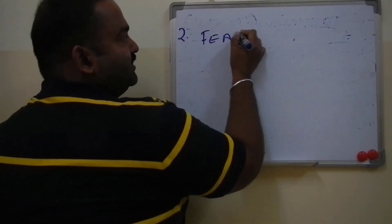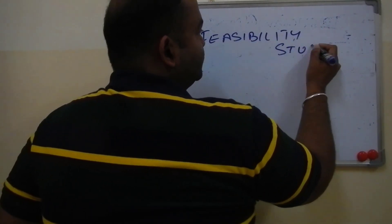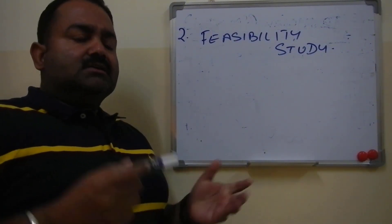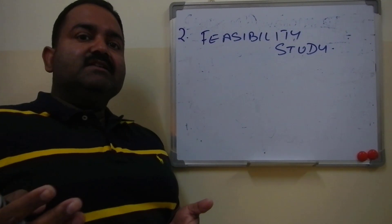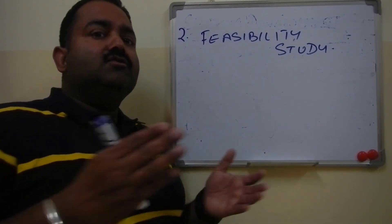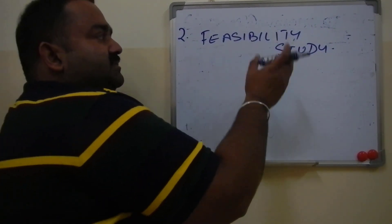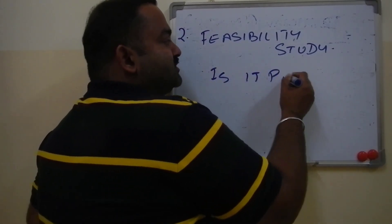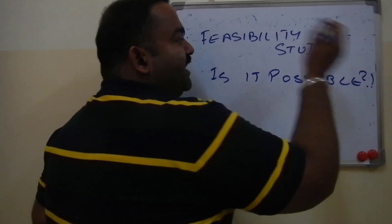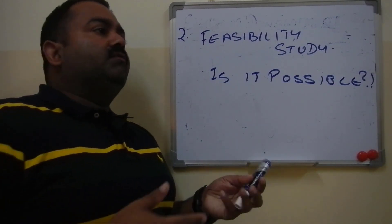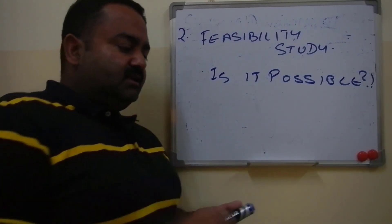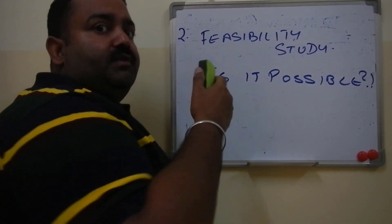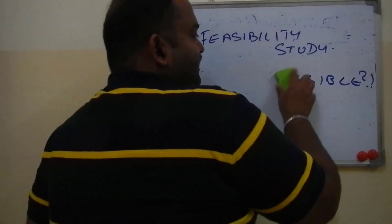Stage two is called Feasibility Study. In this stage, we study whether we can get a new system or not — is it possible? We answer the question: is it possible to have a new system? If it is possible, we move to the next stage; if not, we stop here. In feasibility study, we study different types of feasibility.